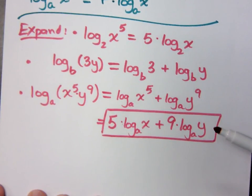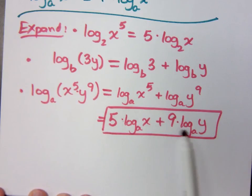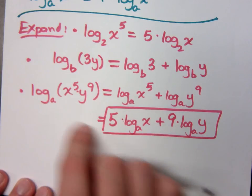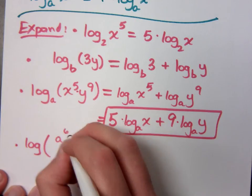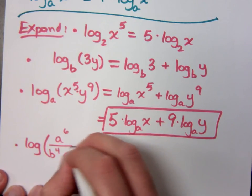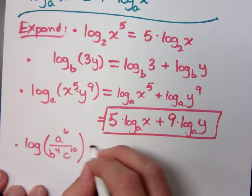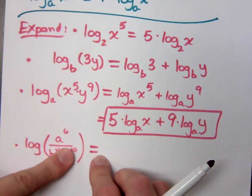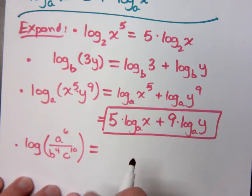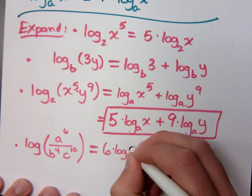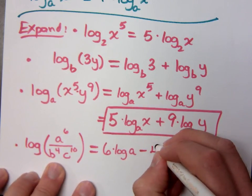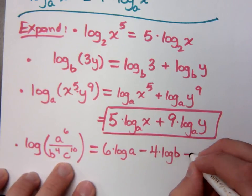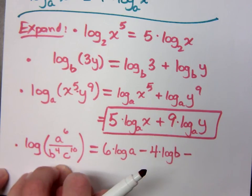Here's a neat hint: when you've got a product, anything in the numerator is going to be positive. If I have something in the denominator, the sign on the outside would be negative. For example, log of a to the 6th over b to the 4th times c to the 10th: a is the only factor that's positive, giving 6 times log a. Then, because b and c are in the denominator, it's minus 4 log b minus 10 log c.